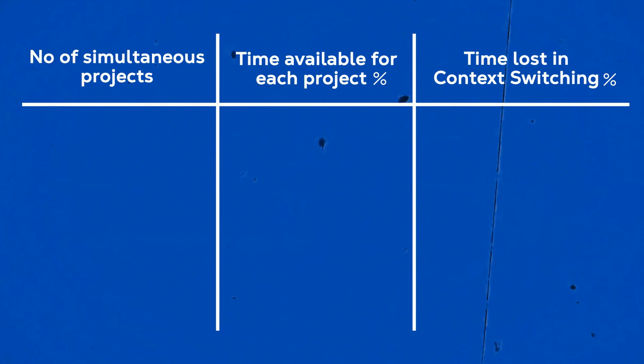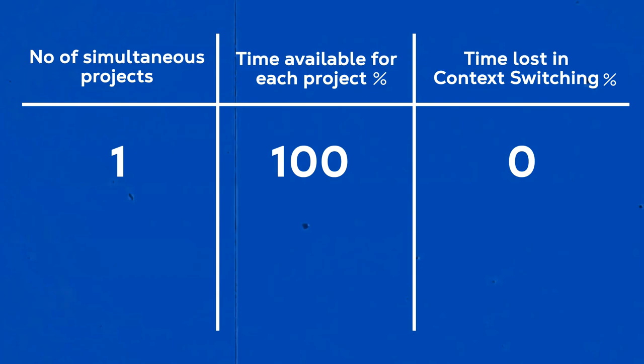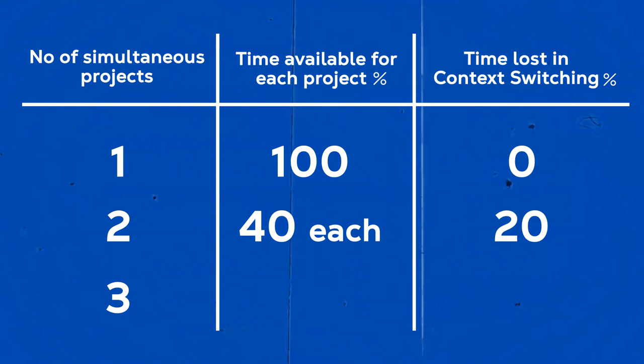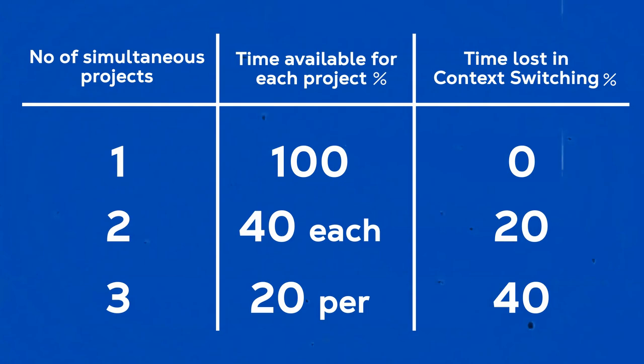The research says: if you work on one project, 100% of your time is available for that project and the loss to context switching is 0%. When there are two projects, you can do only 40% for each project and the loss to context switching is 20%. If you're working on three projects simultaneously, you can do only 20% per project and the loss to context switching is 40%, and so on. So much time is wasted. Multitasking doesn't help — task switching has to be avoided. That was the fourth lean waste.